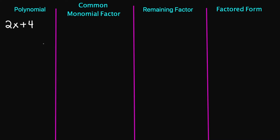So let's say we have the polynomial 2x plus 4. Let's find the common monomial factor. The common monomial factor is going to be the number 2. If I factor out a 2, I'll be left with x plus 2. And your factored form is going to be 2x plus 4 equals 2 times x plus 2.